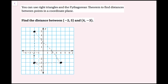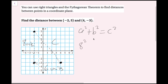Counting the spaces: I get 1, 2, 3, 4, 5, 6, 7, 8 — so this leg is 8 units. And then this one is 1, 2, 3, 4, 5, 6 — so 6 units. I'm looking for the hypotenuse C, because it's opposite the right angle. So I'll write the Pythagorean Theorem: A squared plus B squared equals C squared, and plug in 8 for A and 6 for B, giving 8 squared plus 6 squared equals C squared.